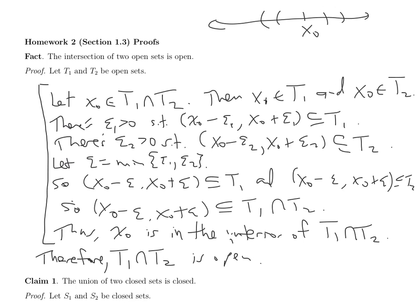And now my proof is complete. The next sentence makes sense: thus X0 is in the interior. We found a neighborhood around X0 completely contained inside the intersection, so X0 is an interior point. X0 was just any point at all from T1 intersect T2, so every point in T1 intersect T2 is an interior point — and that's what it means for the intersection to be open.